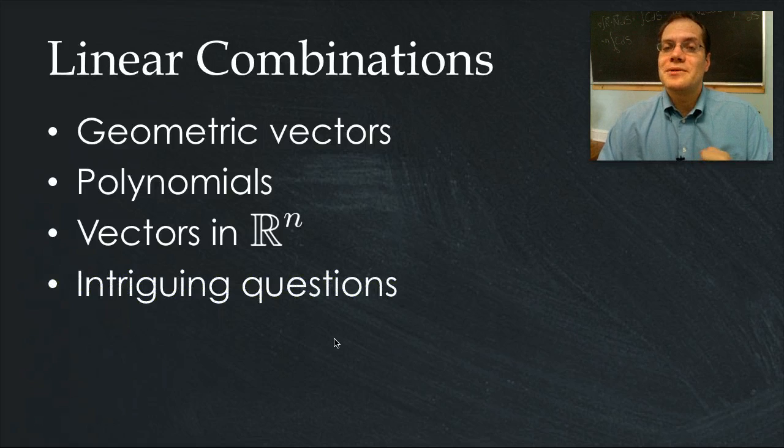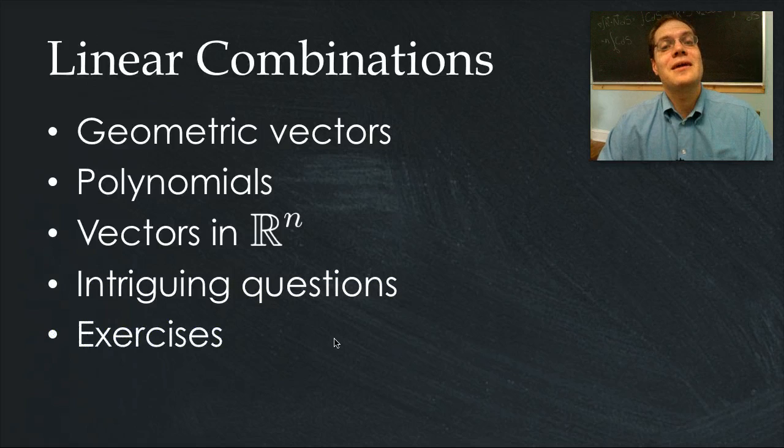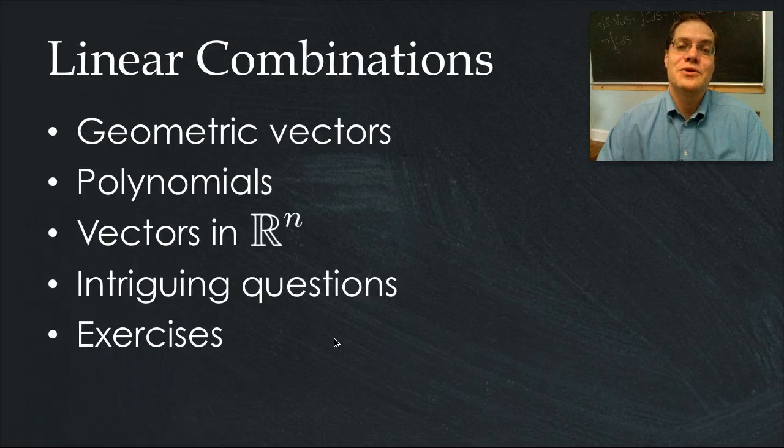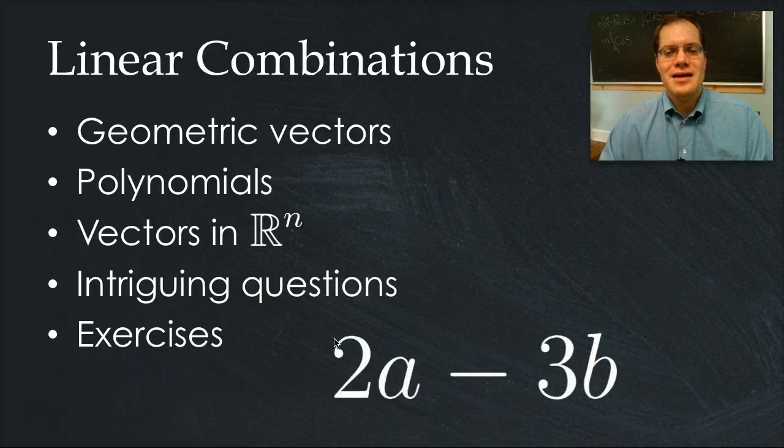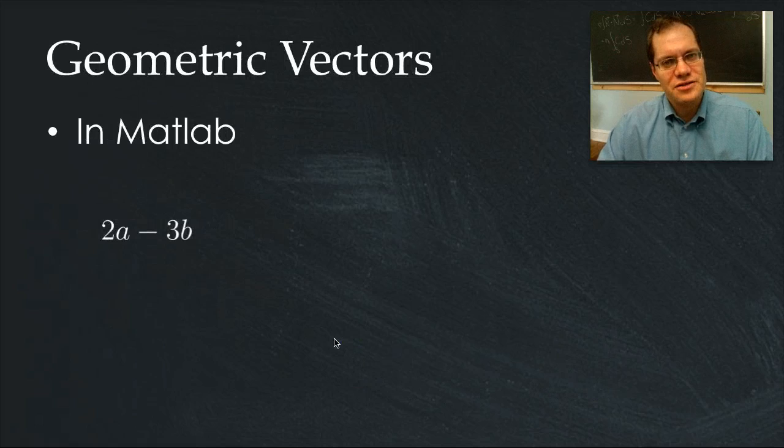This will give you an opportunity to ask a few intriguing questions. And finally, an opportunity to practice what we've learned with a few examples and exercises. The linear combination common to all examples will be 2a minus 3b. Let's start with geometric vectors.